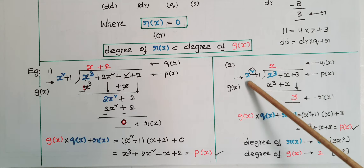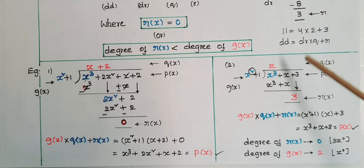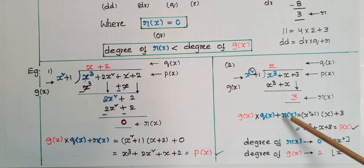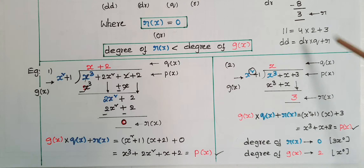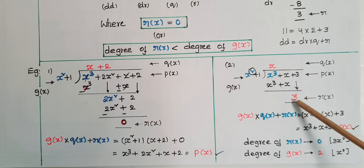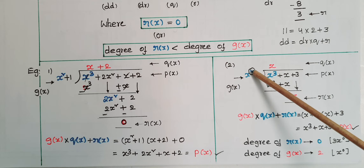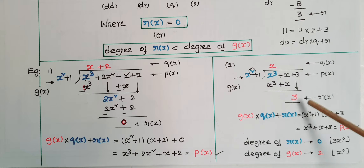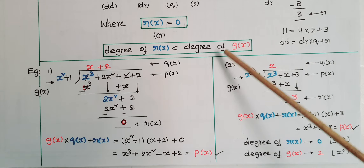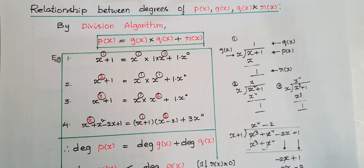Similarly, if you take x³ + x + 3 and divide by x² + 1, you get quotient x and remainder 3. So g(x)·q(x) + r(x) = (x² + 1)·x + 3 = x³ + x + 3, which equals p(x). Here the degree of r(x) is 0 (since 3 is a constant), and the degree of g(x) is 2, so degree of r(x) is less than degree of g(x).